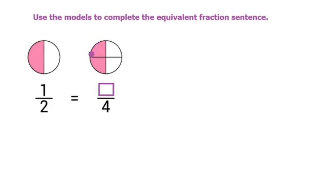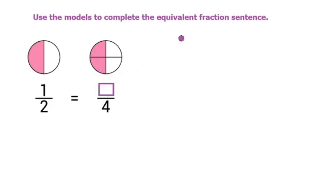This model would have to have the same shape, size, and colored area as this one, and we can see that it does. We have two colored pieces that are equal parts out of a total of four — one, two, three, four. So we have two out of four colored parts, and that's what we put there: two out of four.